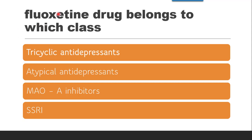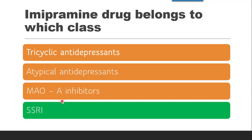Next question: Fluoxetine drug belongs to which class? Fluoxetine, as per the classification of antidepressant drugs, belongs to the SSRI class — that is, Selective Serotonin Reuptake Inhibitors. The options are TCA (tricyclic antidepressant), atypical antidepressant, MAO-inhibitors, and SSRI. The correct answer is SSRI.